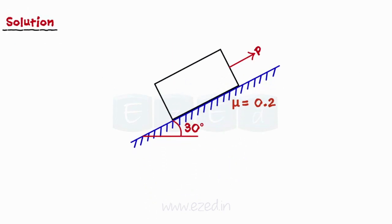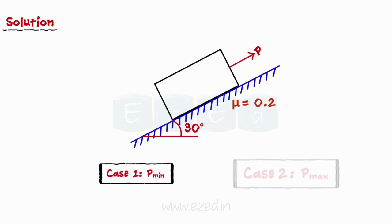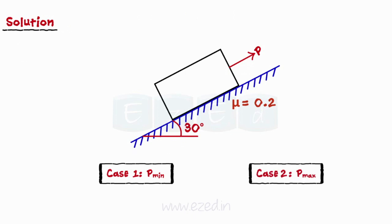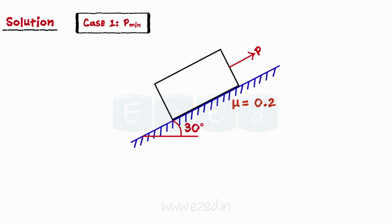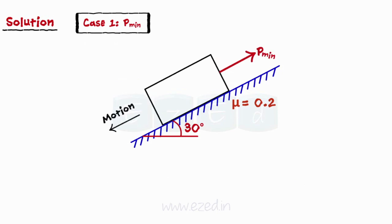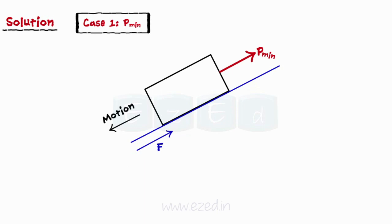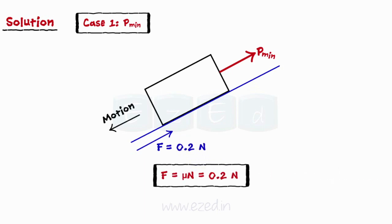As we have to find the range of applied force P, we will find the minimum possible and the maximum possible value of P. The minimum value of applied force for equilibrium, P_min, will just be sufficient to prevent the block from moving down the plane. The frictional force will therefore act upwards on the plane and is equal to 0.2 times the normal reaction.